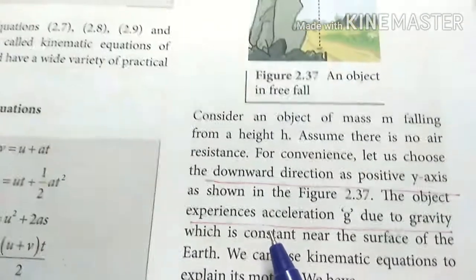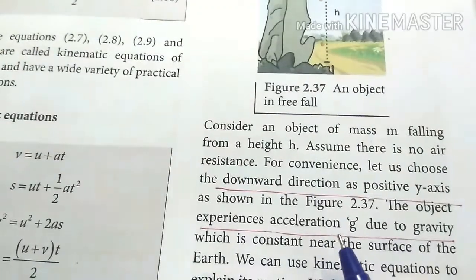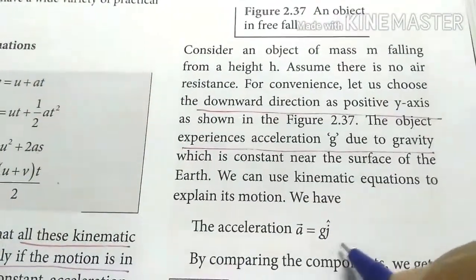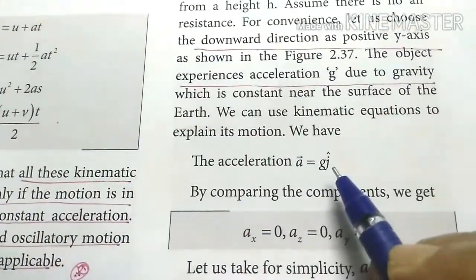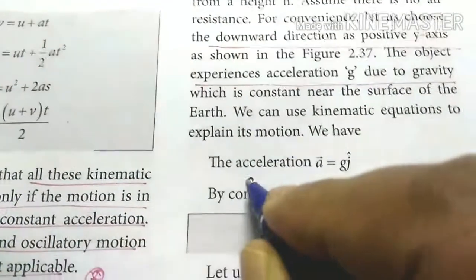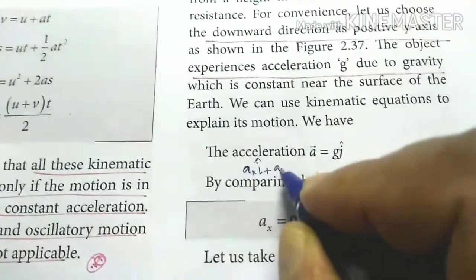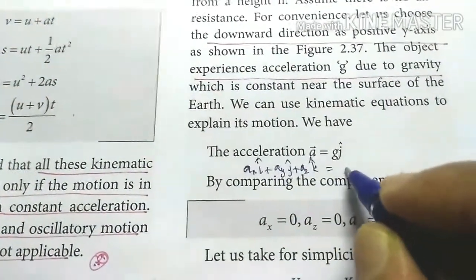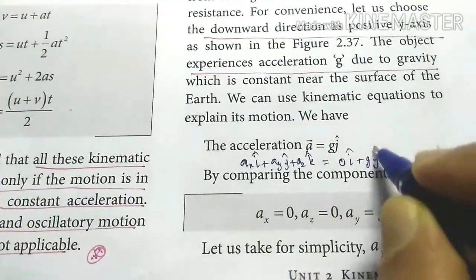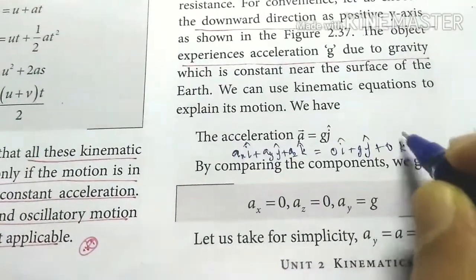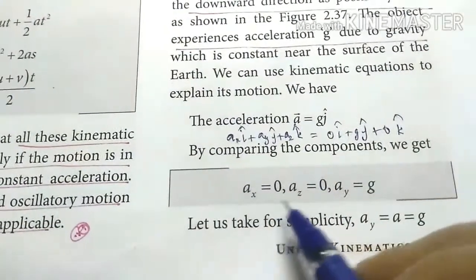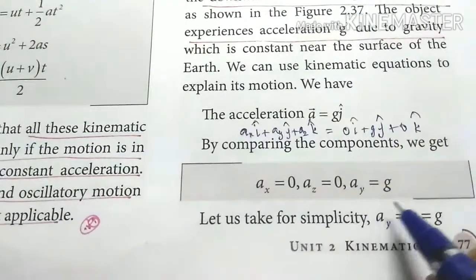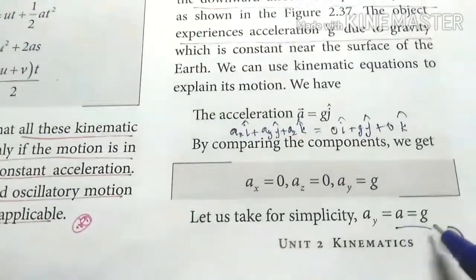The object experiences an acceleration due to gravity g, so acceleration equals g. If we compare the component of acceleration along the y-axis, we simply get a equal to g.